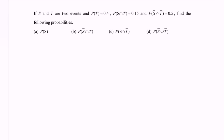If S and T are two events, and the probability of T is equal to 0.4, the probability of S intersect T is equal to 0.15, and the probability of S intersect with the T complement is equal to 0.5. Find the following probabilities.